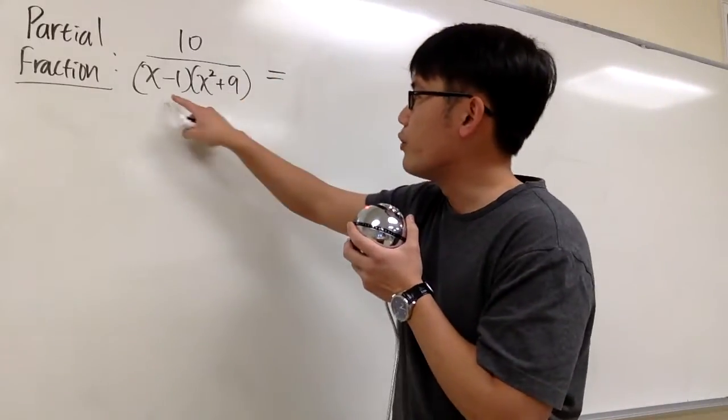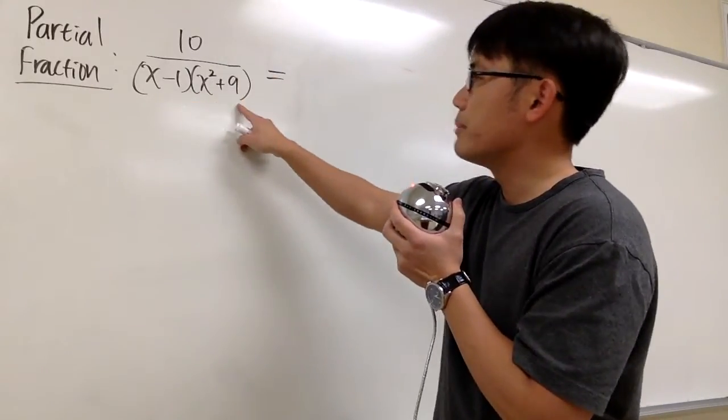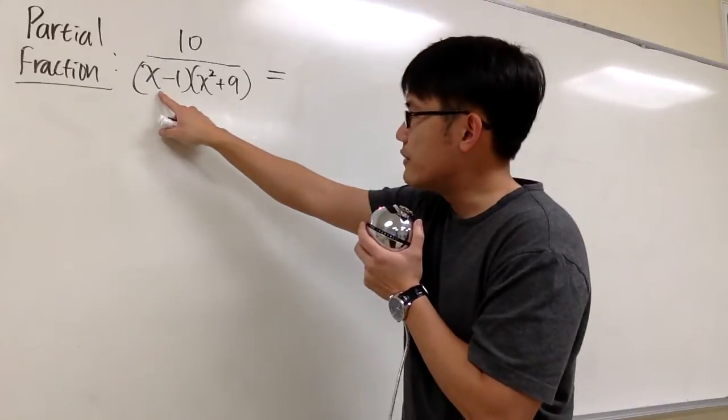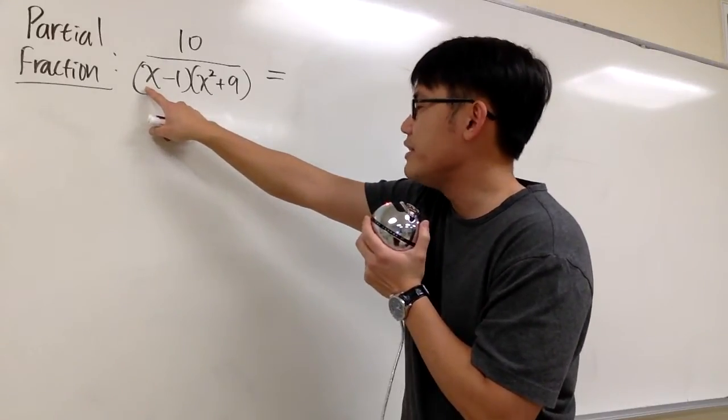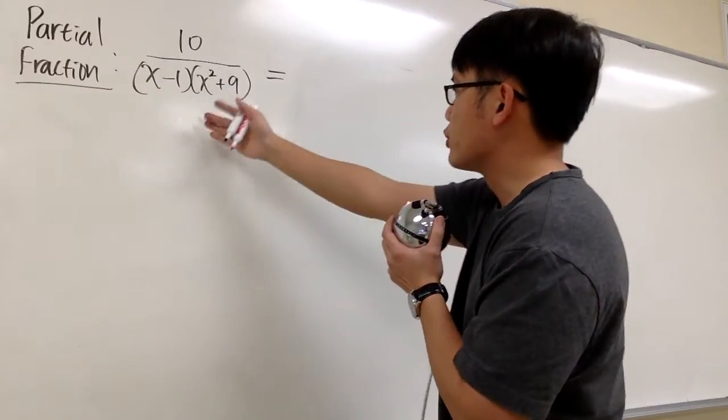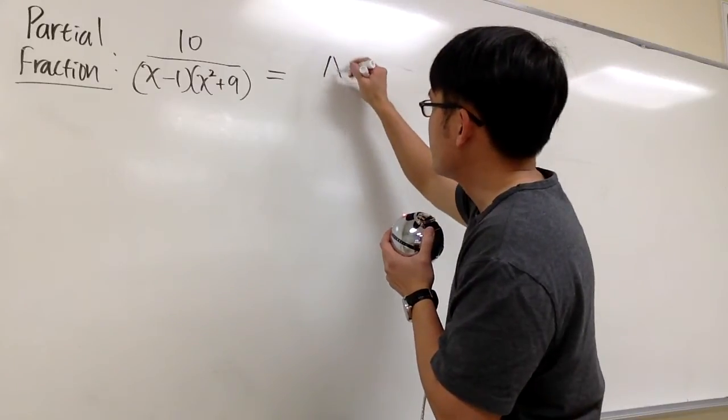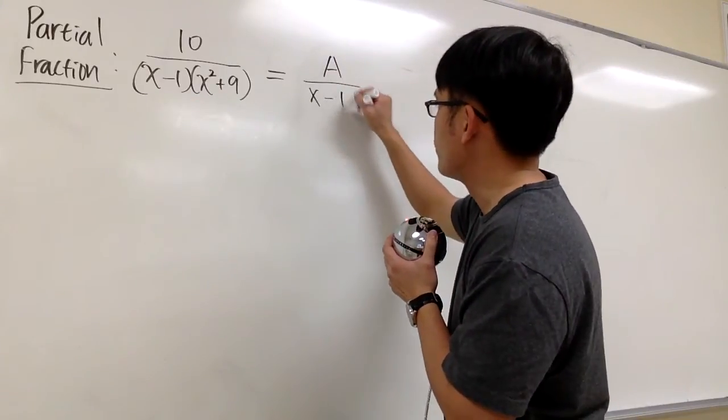Let's do a partial fraction for 10 over (x - 1)(x² + 9). So for the first factor on the denominator, we just have a linear factor, x - 1. So to break down, we will have some number A over x - 1. That's the first one we know.